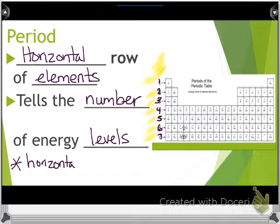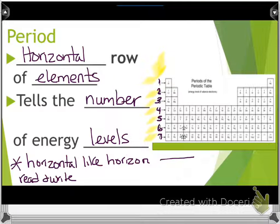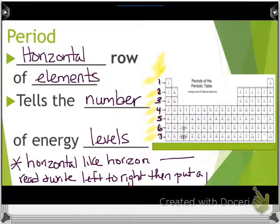A way to remember horizontal is like horizon. You see the horizon if you've been to the beach, it's where the ocean meets the sky. If you look outside our window and you look at the horizon, it's where the sky meets the earth. That's the horizon.